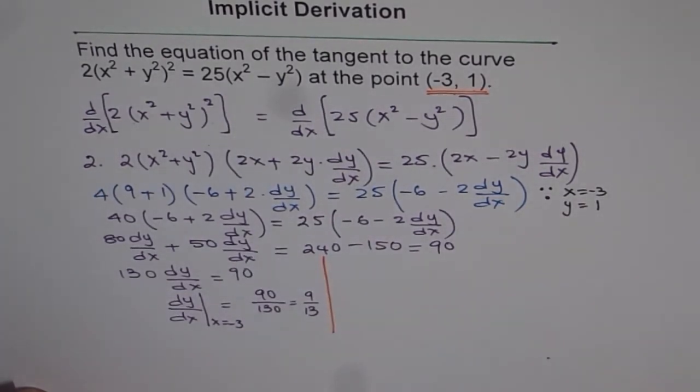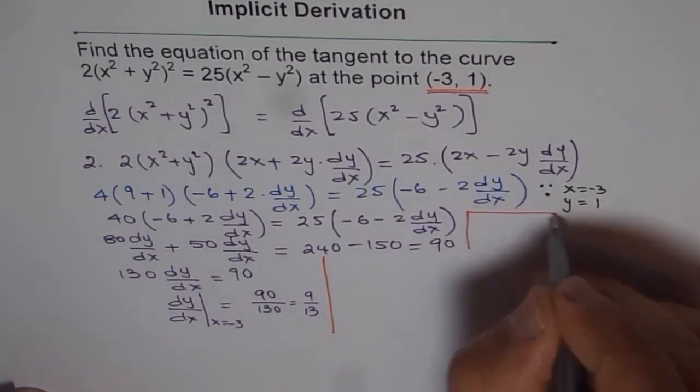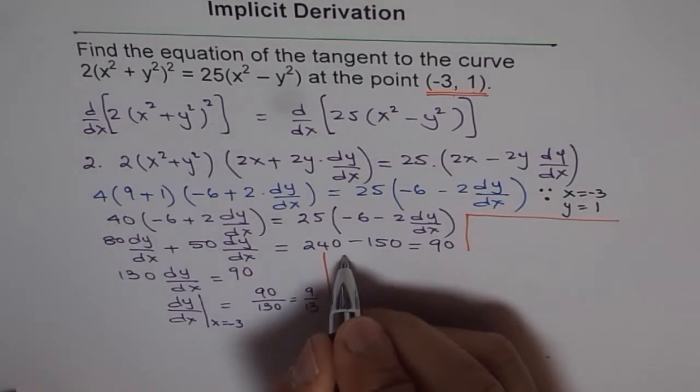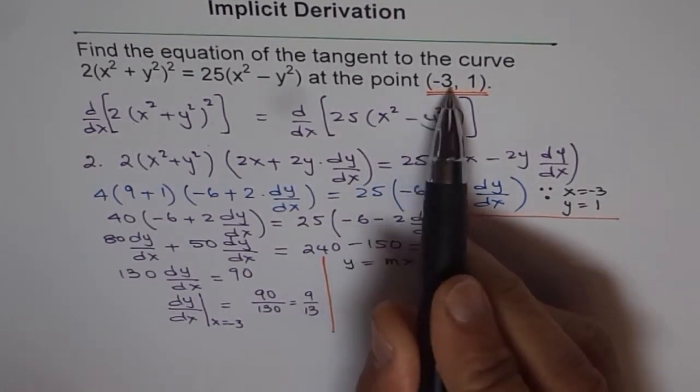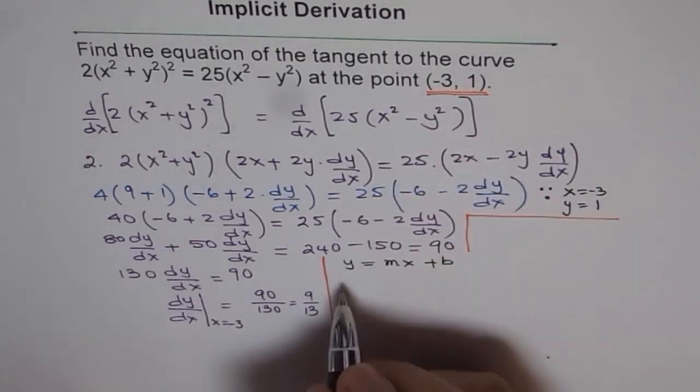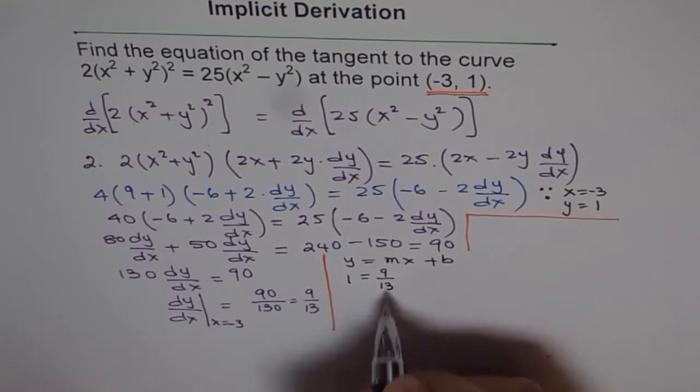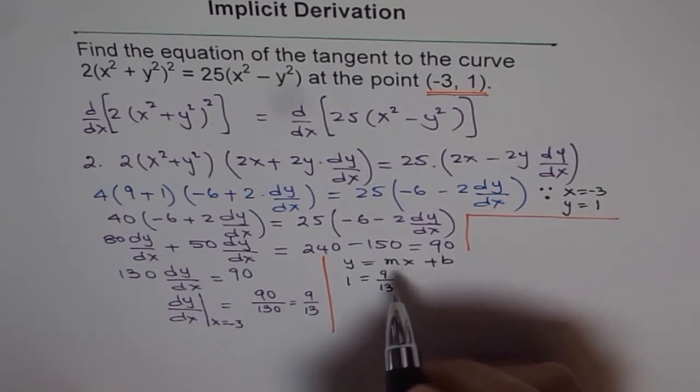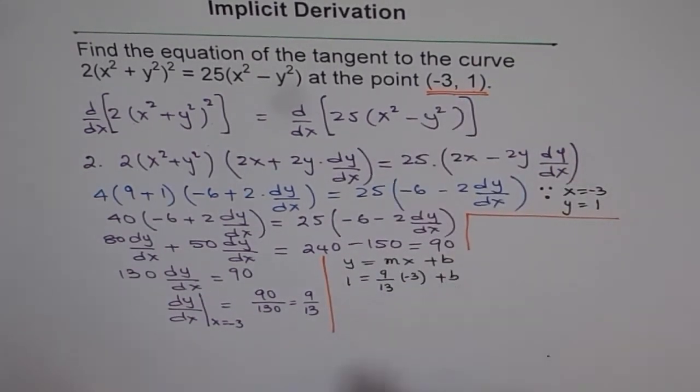Now the second part is the equation of the line. The equation of the line is y = mx + b. So we will use y = mx + b and get the equation of the line. So the point is (-3, 1), 1 is the y value. Slope is 9/13. And x value is -3. We need to find b.